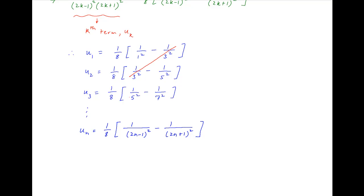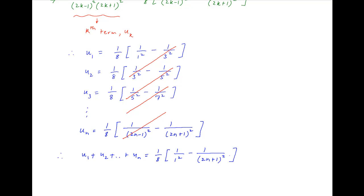Now we add all of these equations. On the right hand side, alternate terms cancel, and we are left with only 2 terms. On the left hand side we have u1 plus u2 plus and so on till un, which equals 1 upon 8 times [1 minus 1 upon (2n plus 1) whole square]. This is the sum of the first n terms of the given series, denoted Sn. Therefore Sn is equal to 1 upon 8 times [1 minus 1 upon (2n plus 1) whole square].